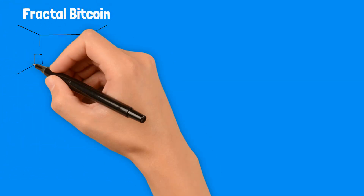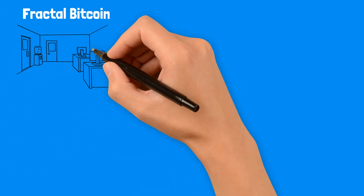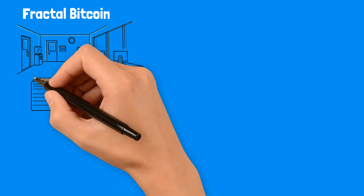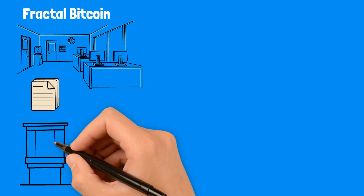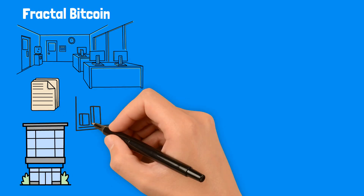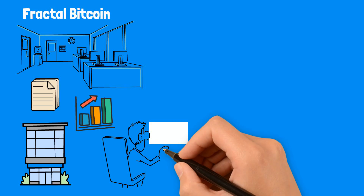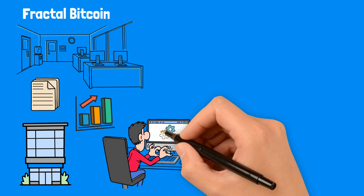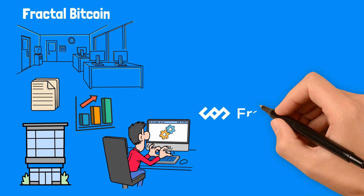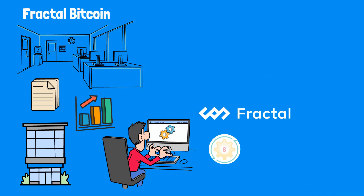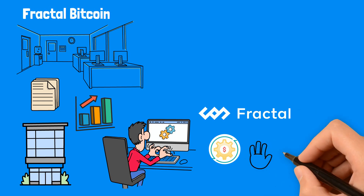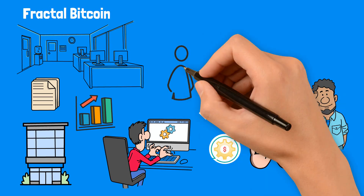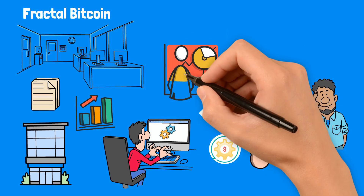Think of Fractal Bitcoin as a dynamic office space that can add new rooms as the team grows. Each room functions independently for different projects but is connected to the primary office. This adaptability allows the office to accommodate a growing workforce without disrupting daily operations — ensuring everything runs smoothly, just like Fractal Bitcoin handles increasing transactions. We're here to arm you with the knowledge and strategies you need to master the fascinating world of Bitcoin fractals.